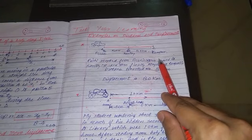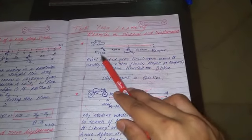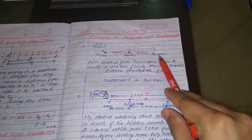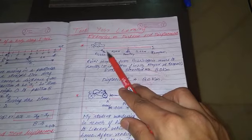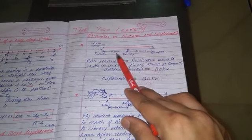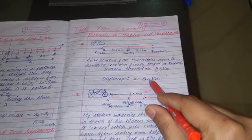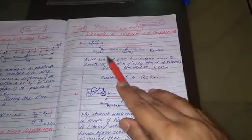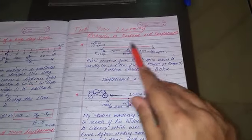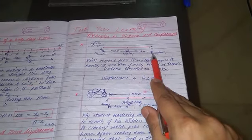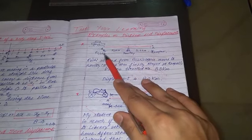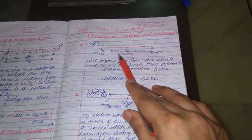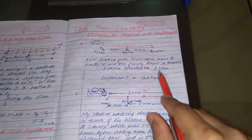If you stayed at Rampur, what is your displacement? Right now your initial position is Pilibit and the final position is Rampur. So the shortest distance between your initial position and your final position is 50 plus 30, that is 80 km. The distance between Pilibit and Rampur is 80 km.